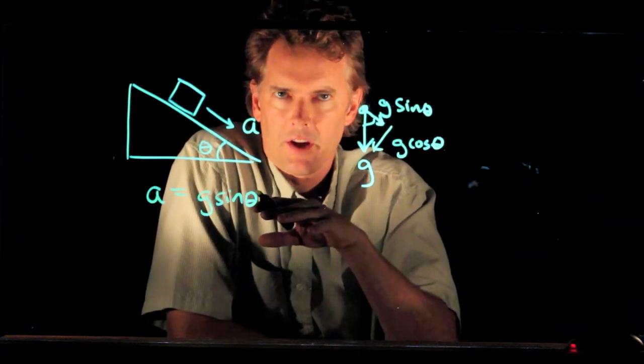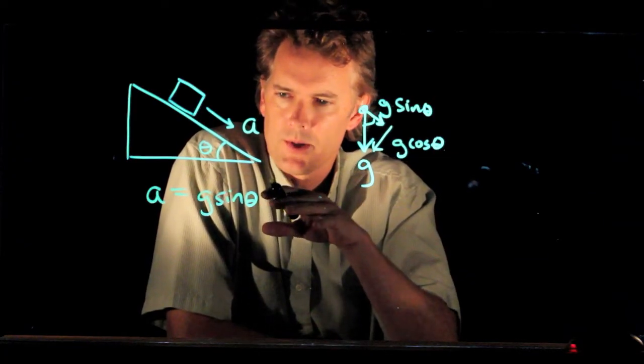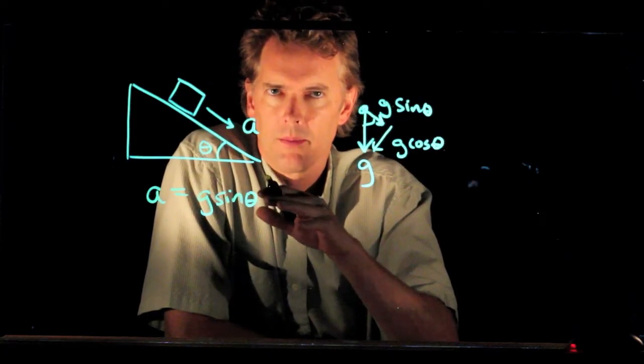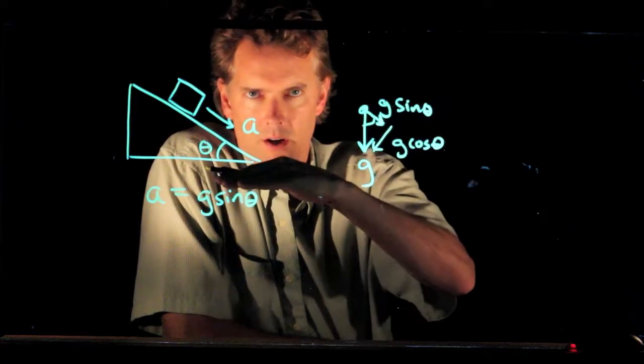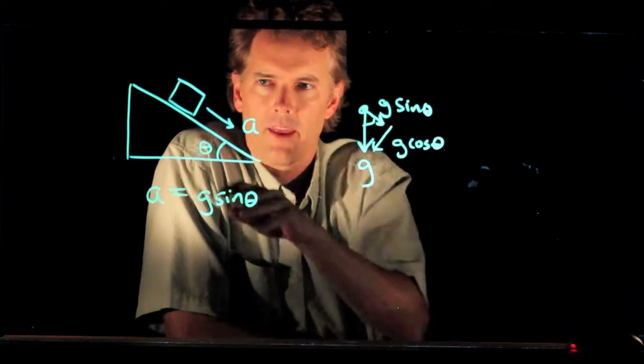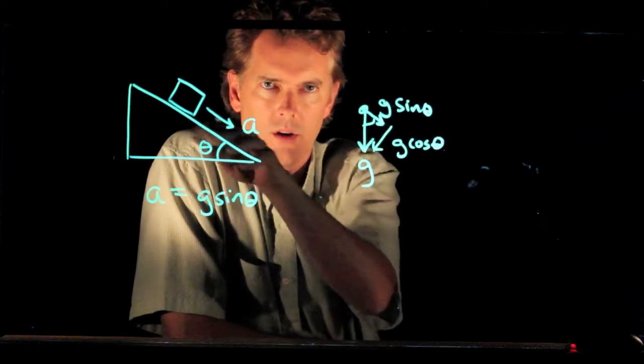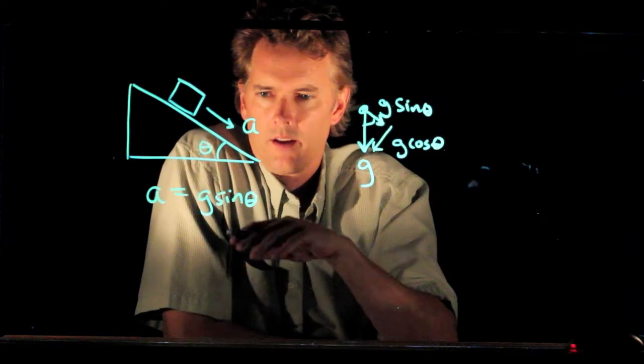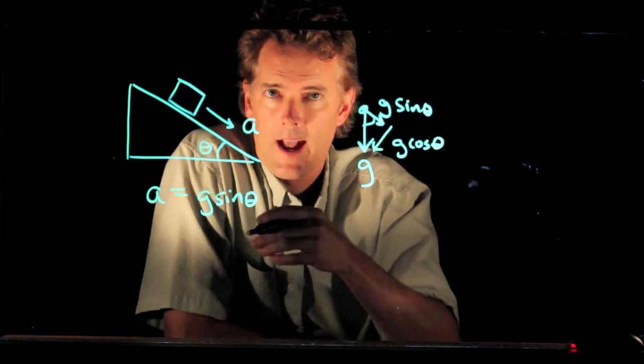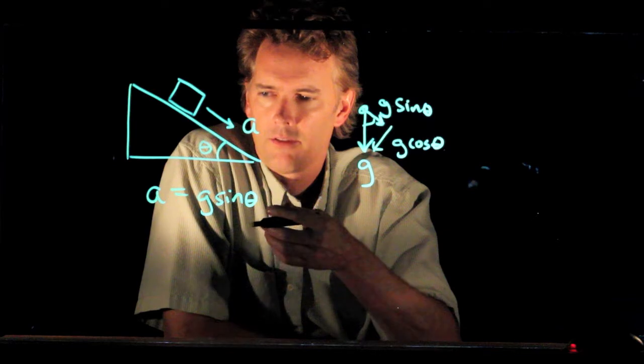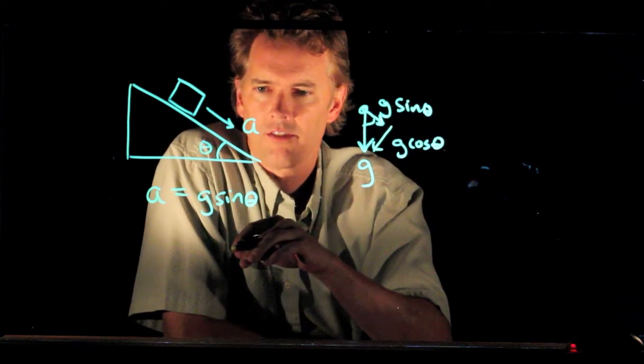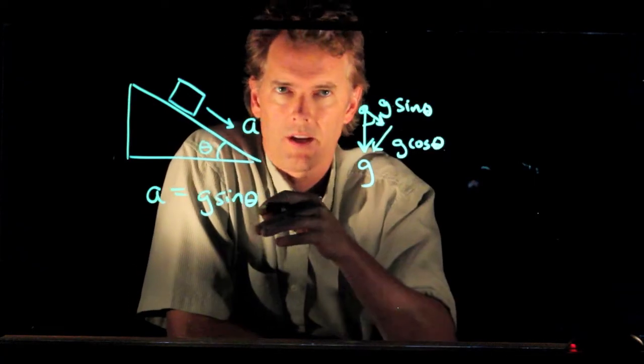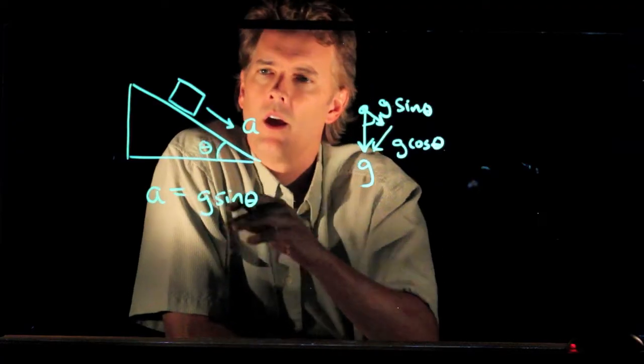You can prove this to yourself using a little bit of geometry, but you can also prove it to yourself just by looking at the limits. If theta goes to zero, then this is a horizontal surface, and there should be no movement horizontally. There should be no acceleration horizontally. Sine of zero, in fact, goes to zero. And so that tells you that this acceleration has to be g sine theta, not g cosine theta, because cosine of zero, in fact, goes to one.